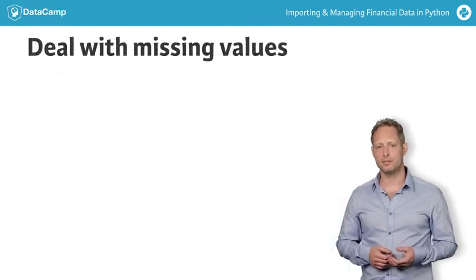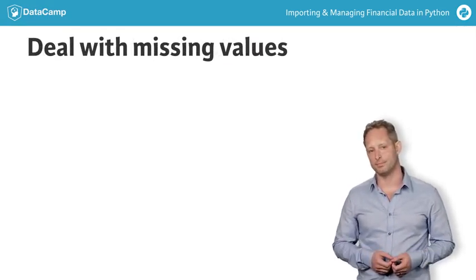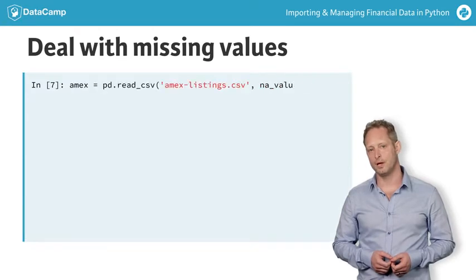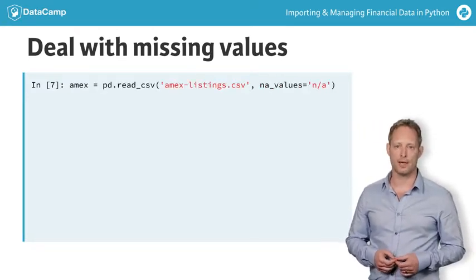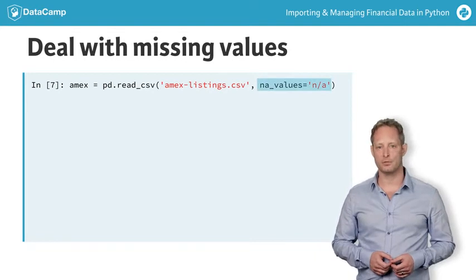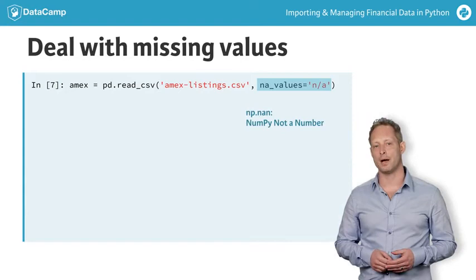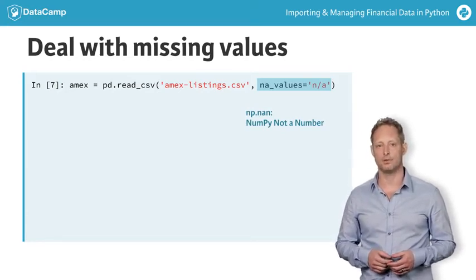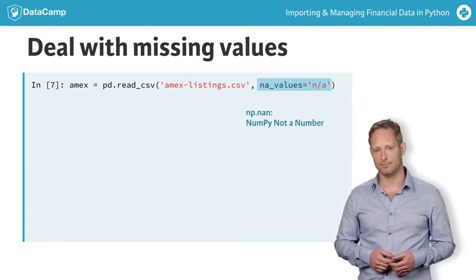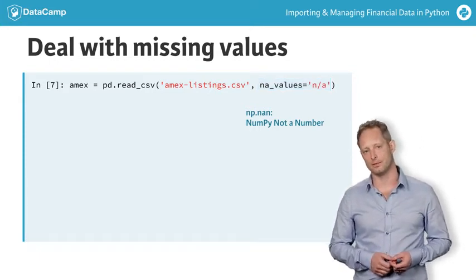The read_csv function takes several parameters to help you parse the CSV file. To deal with missing values, use the parameter na_values. Just pass a string that identifies missing values in the source file, and Pandas will replace them with the numpy value np.nan, which stands for not a number. This makes sure that calculations with missing values work as expected.